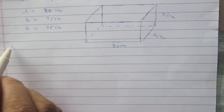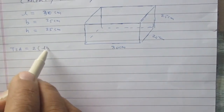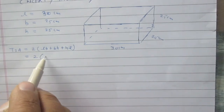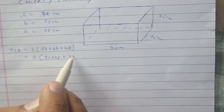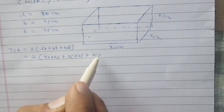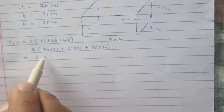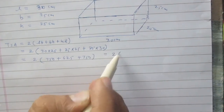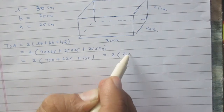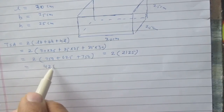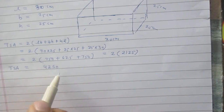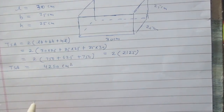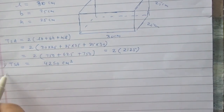The total surface area of the cuboid is 2(lb + bh + hl). Substituting the values: 2(30×25 + 25×25 + 25×30) = 2(750 + 625 + 750) = 2(2125) = 4250. So the total surface area of this cuboid herbarium is 4250 square centimeters. Part one is now complete.